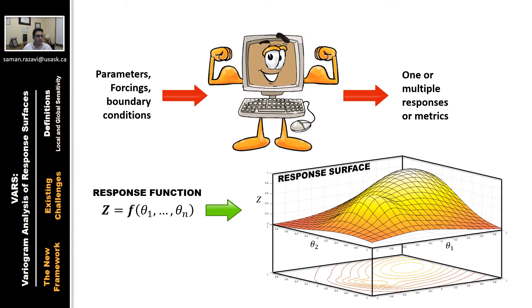The response function represents a response surface in the parameter or factor space. I'm here showing a simple example, a simple conceptual one with only two inputs or two parameters, theta one and theta two. For different values of parameters, we get different model responses. We typically want to characterize these response surfaces, and sensitivity analysis can be quite helpful in that. Sensitivity analysis can tell us the role and impact of each individual parameter on the model response, the Z variable.